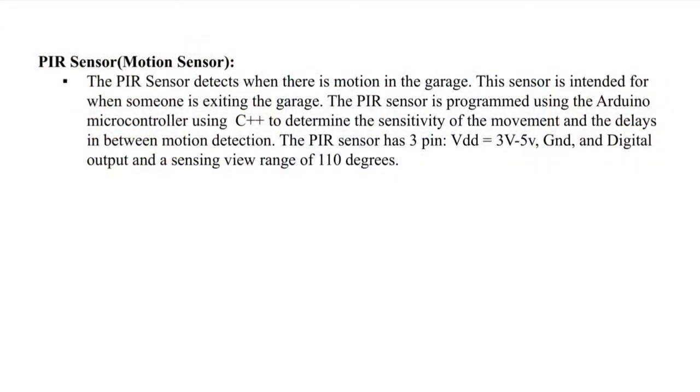The next sensor we will be showing is the PIR sensor followed by a demonstration. The PIR sensor detects when there is motion in the garage. This sensor is intended for when someone is exiting the garage. The PIR sensor is programmed using the Arduino microcontroller using C++ to determine the sensitivity of the movement and the delay in between motion detection. The PIR sensor has three pins: VDD which is between three volts and five volts, ground, and digital output, and a sensing view range of 110 degrees.